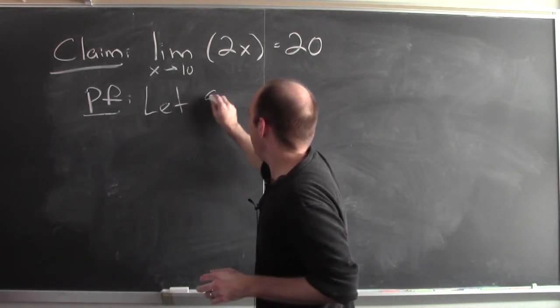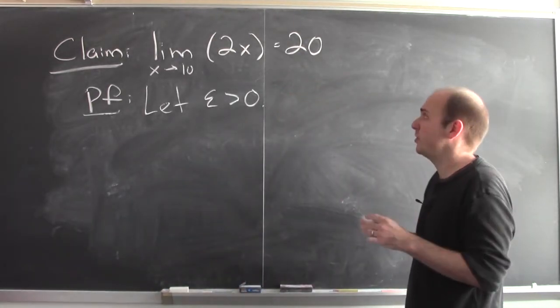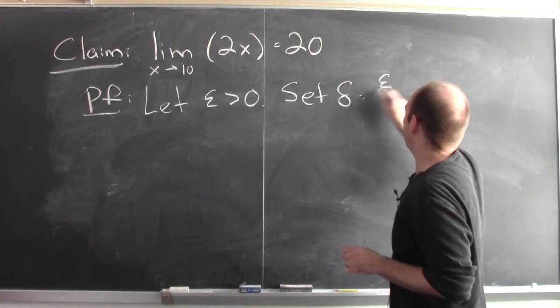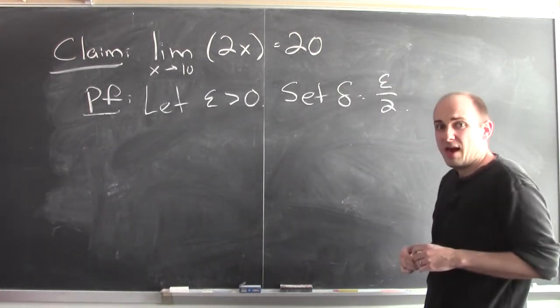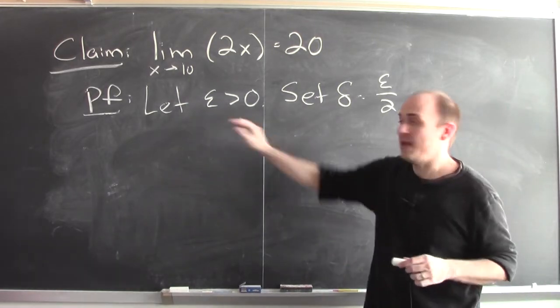So proof. Let epsilon be bigger than 0. I don't know how small a number epsilon you're going to choose. I'm going to set delta equal to epsilon over 2. I'm going to check now that this value of delta will work to satisfy your demand involving epsilon.